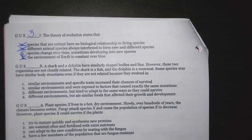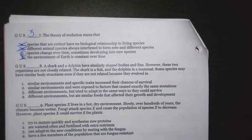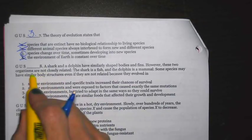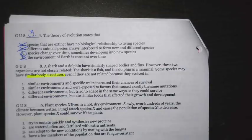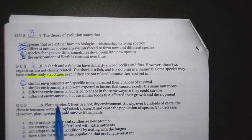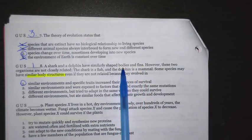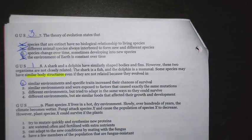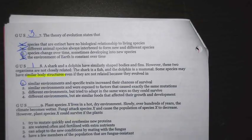A shark and a dolphin have similarly shaped bodies and fins. However, these two organisms are not closely related — the shark is a fish and the dolphin is a mammal. Some species may have similar body structures even if they are not related because they evolved blank. The best answer choice is one: similar environments and specific traits increase their chances of survival. Having this shaped fin and body was a positive — when swimming in the ocean, they were more likely to survive and pass on that trait. This does not mean they have a recent common ancestor; it just means similar environmental conditions selected for specific traits.